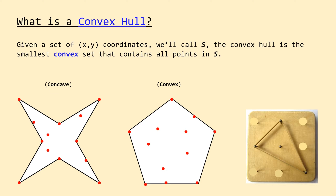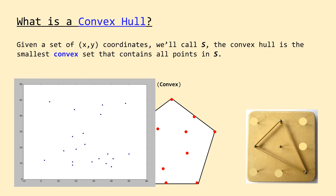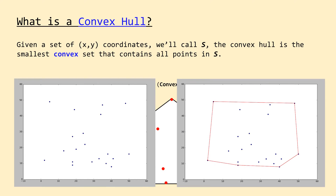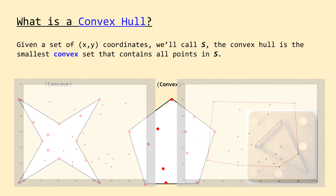So to start things off, before we can really talk about the Graham Scan algorithm, we need to understand what a convex hull is. Given a set of XY points, the convex hull is the smallest convex set that contains all the points. So essentially if you're provided with a set of XY points and are asked to construct the convex hull, you need to return a subset of those points that's convex all the way around and contains every single point.